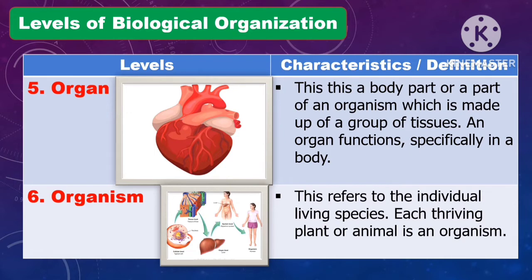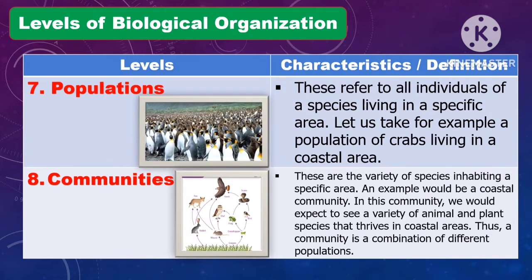Another level is the organism. An organism refers to an individual living species — each thriving plant or animal is an organism. Another level of biological organization is populations. This refers to all individuals of a species living in a specific area. For example, a population of crabs living in the coastal area.